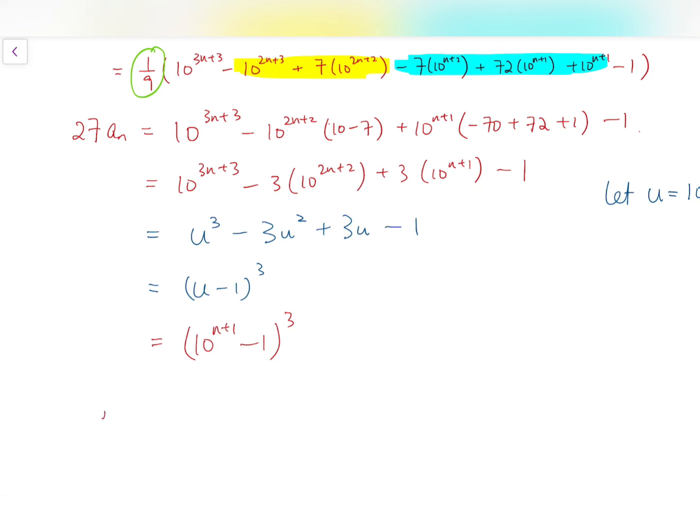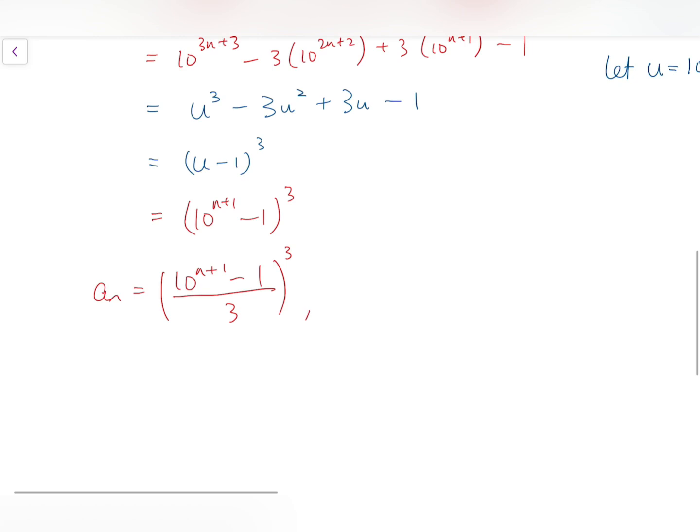And this is equal to 27 times a_n. So finally, I can move the 27 to the right, which is actually 3 cubed. So a_n equals this number, all cubed. So we'll finish proving the claim.